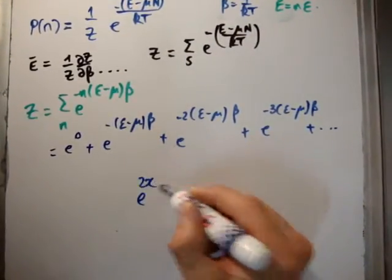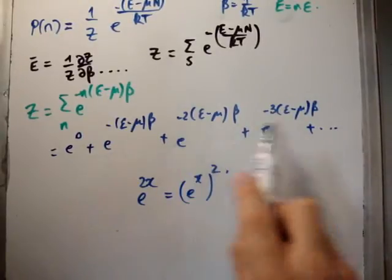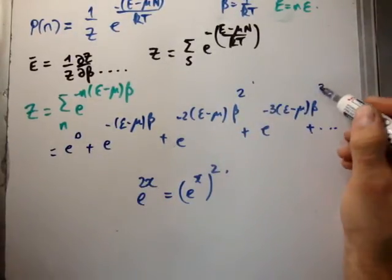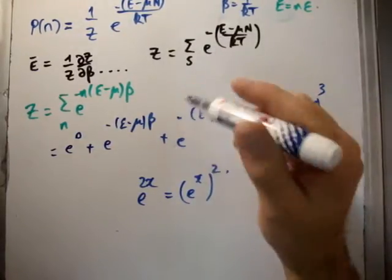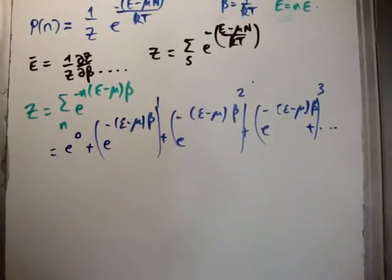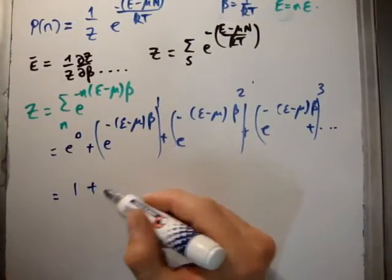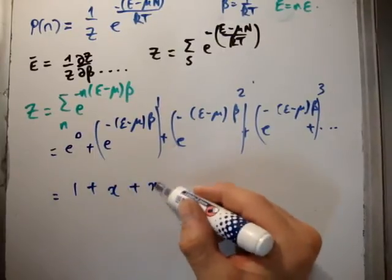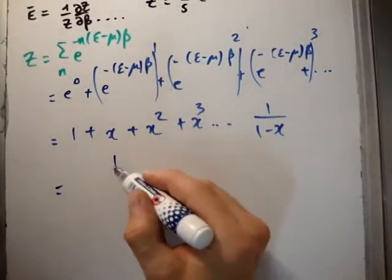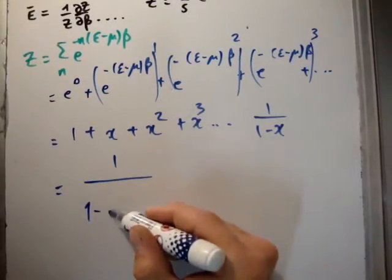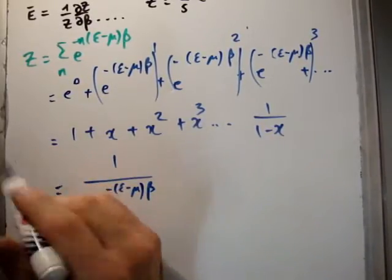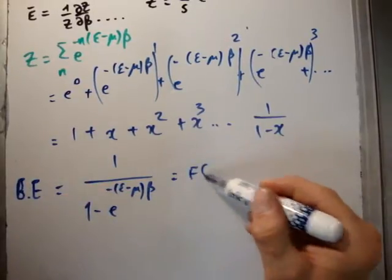Now, e to the 2x can be written as (e to the x) squared. So each of those terms can be written as a power — to the 0, to the 1, to the 2, to the 3, and so on. We can recast the problem: 1 plus x plus x squared plus x cubed off up to infinity equals 1 over 1 minus x. So in this case, it's going to be 1 over 1 minus e to the minus (epsilon minus mu) beta. That is the grand partition function — the Bose-Einstein grand partition function.